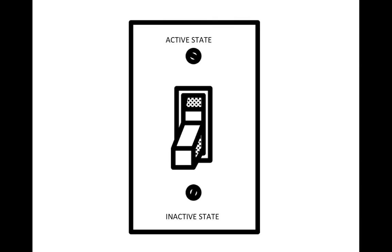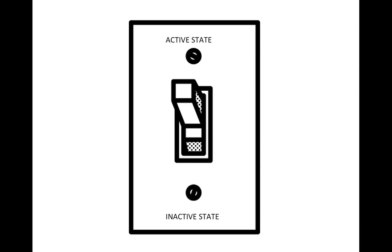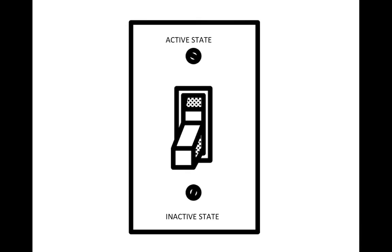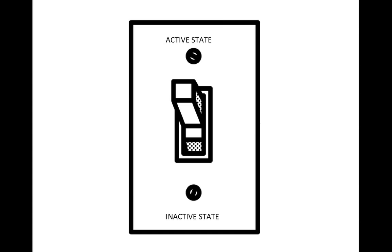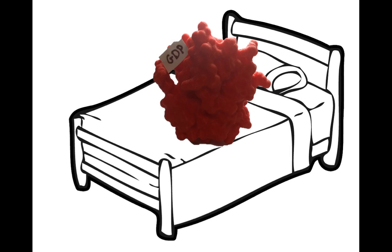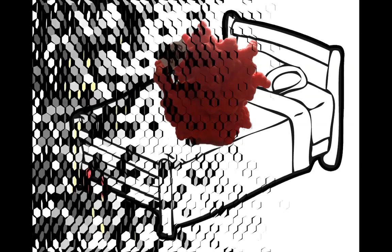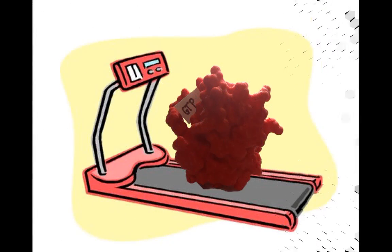RAS proteins function as a binary molecular switch with an on-active state and off-inactive state. In resting cells, RAS is found in its off-state with GDP bound to the RAS binding domain. To turn it on, GDP is swapped for GTP, allowing delivery of the signal, followed by hydrolysis of GTP back to GDP and Pi, turning the protein off.